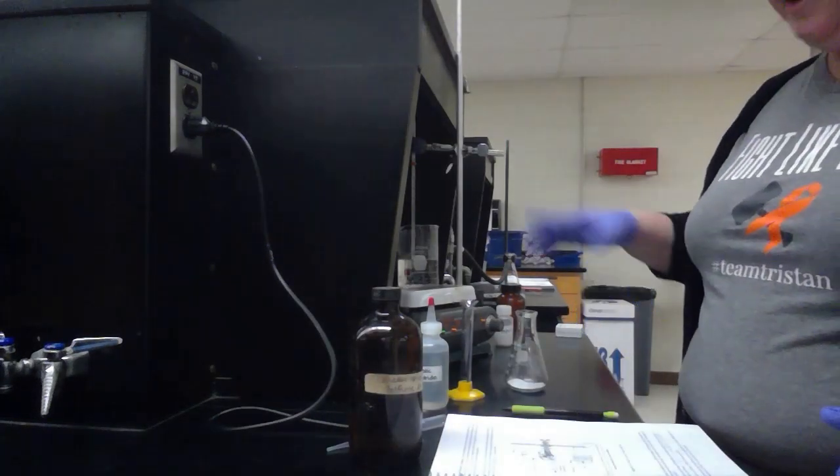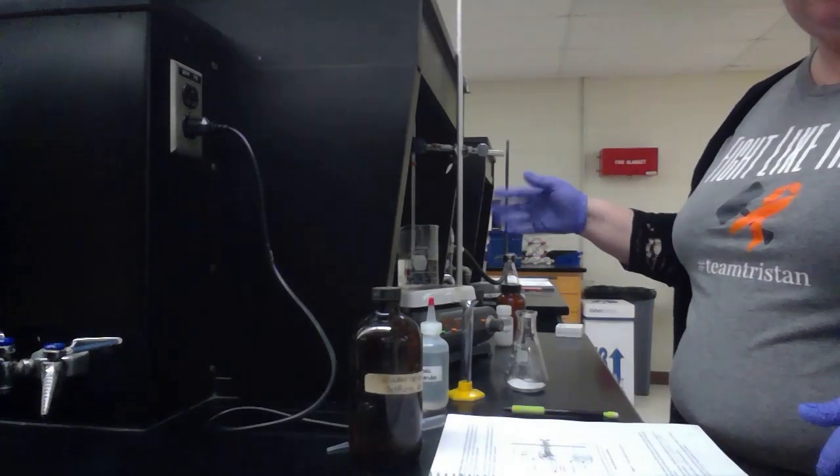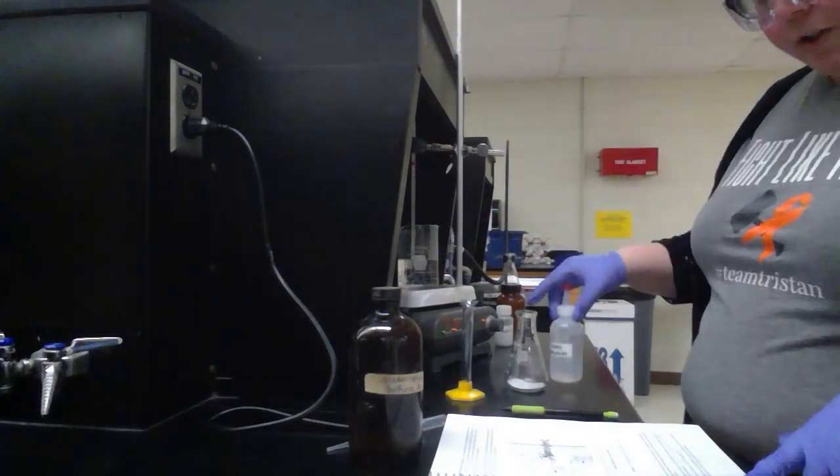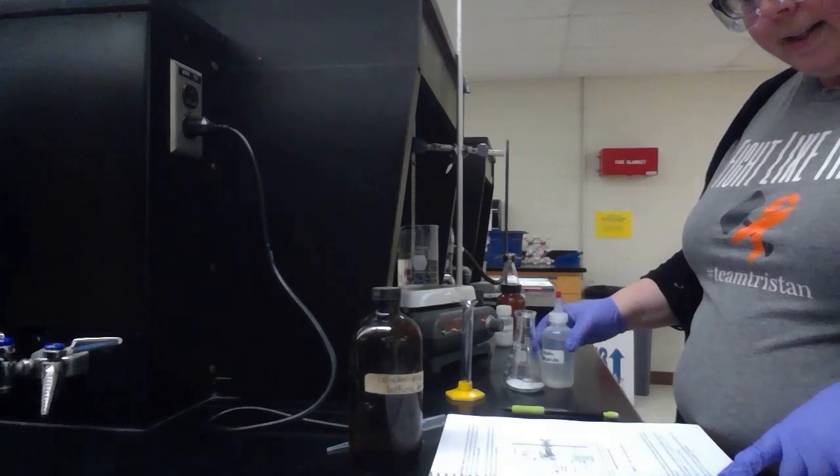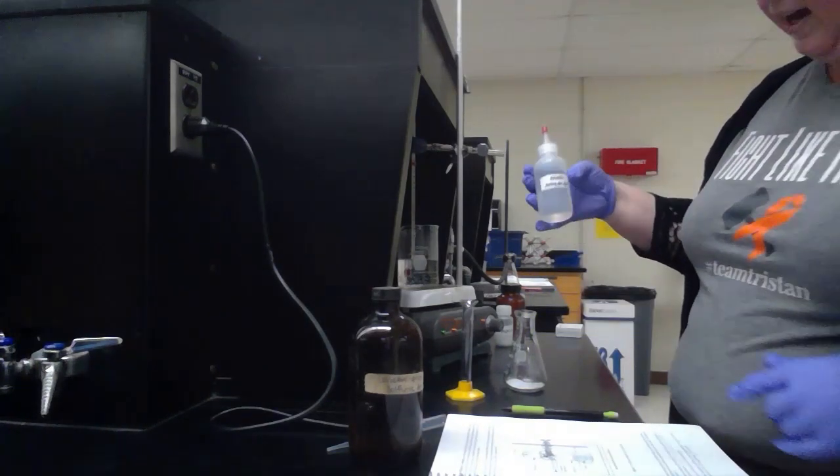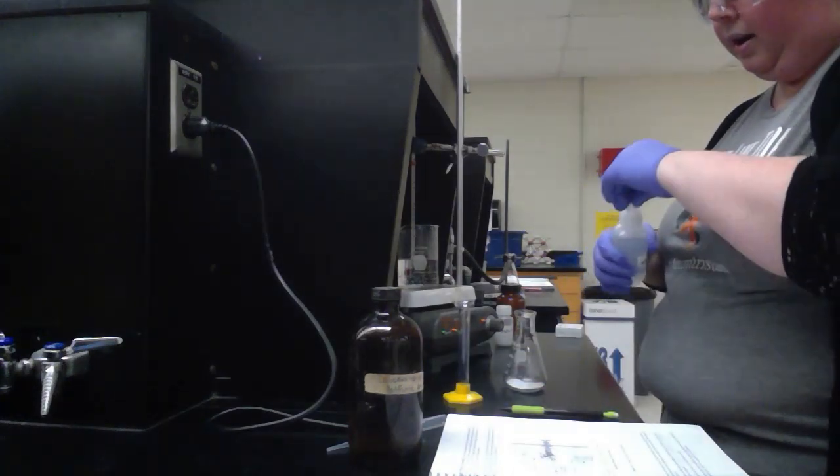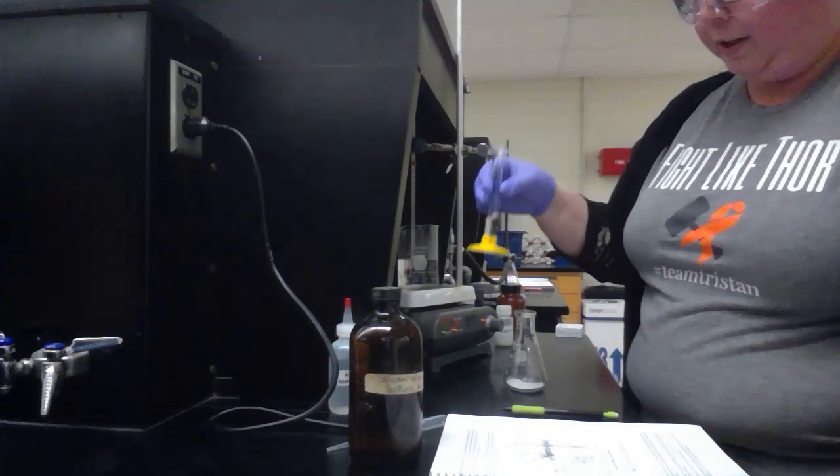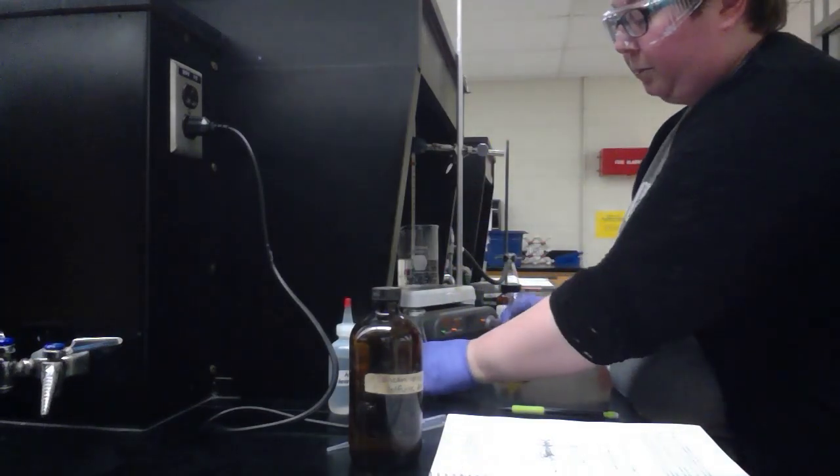Now that my water bath is up to the correct temperature, I'm going to follow the procedure. The next thing I need to do inside the personal fume hood is add four milliliters of acetic anhydride. I'm going to measure that out in my graduated cylinder. I have four milliliters of that under the personal fume hood.